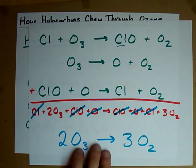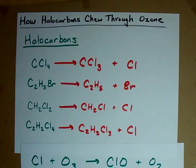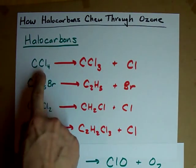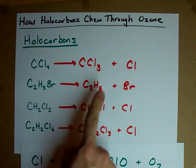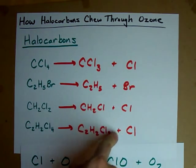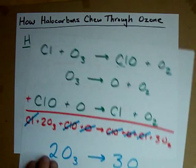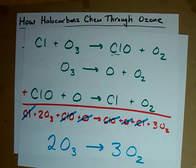Thus, the problem with the ozone layer is that we're releasing halocarbons into the atmosphere to produce these free halogens. And that's how halocarbons chew through ozone.